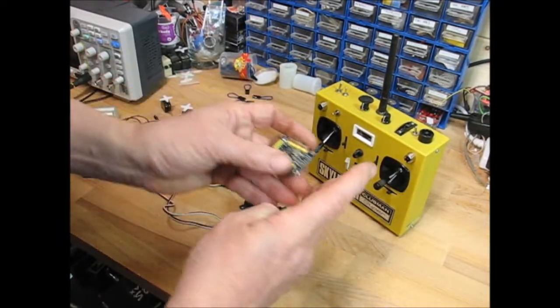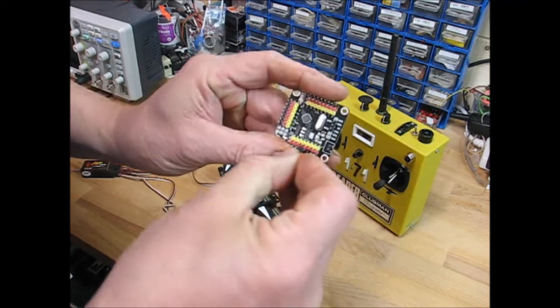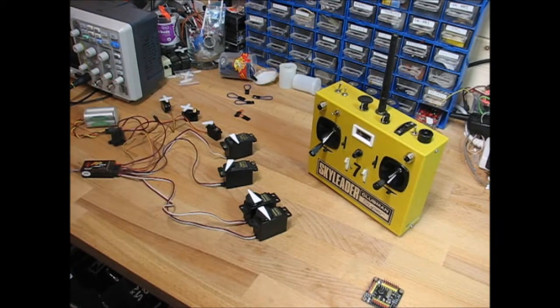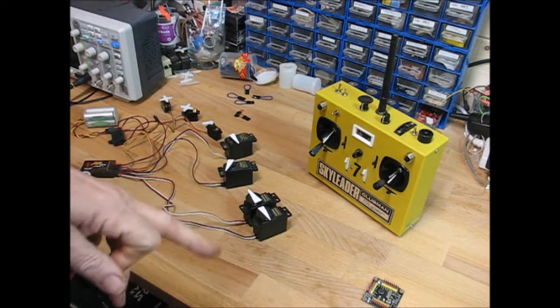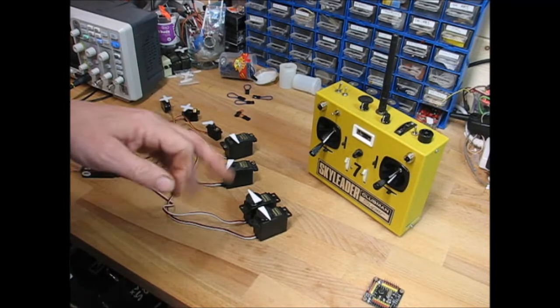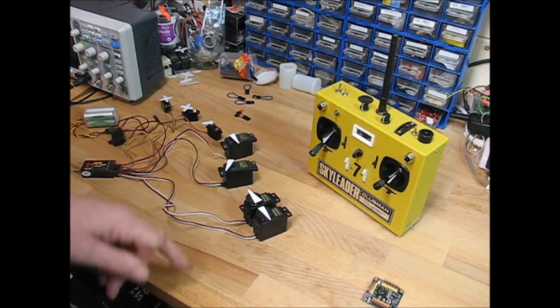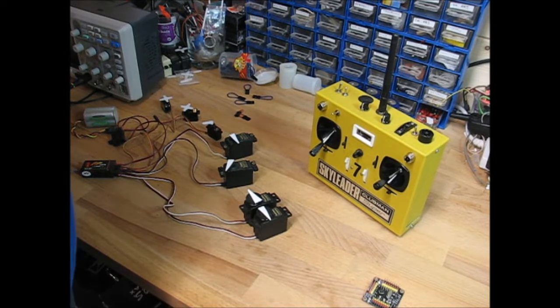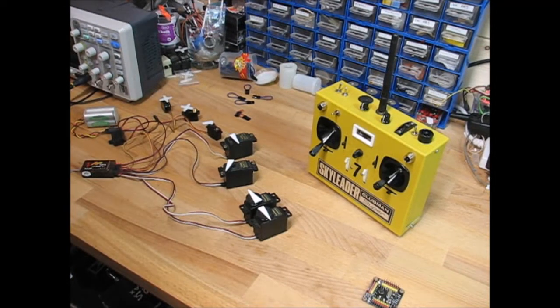Using these link options, you can select, this is Futaba channel order, AETR, aileron elevator throttle rudder, which is normal for Futaba. It will also do TAER, which is throttle aileron elevator rudder for Spectrum people. It will also do ETAR, and not that you would ever fly with ETAR, but what that does is it unscrambles the orange module that's got the channel mapping in it that you don't want.